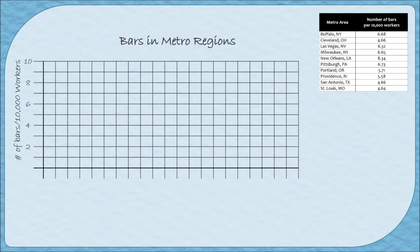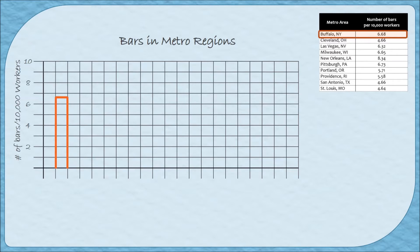Now comes the fun part — we get to make the bars. The first city in our table is Buffalo, New York, which has 6.68 bars per 10,000 workers. Because it's a decimal I'm going to have to approximate the height of the bar. To create the bar for Buffalo, New York, I go a little bit higher than halfway between the six and seven lines. Since 0.68 is more than 0.5, this line should go a little bit higher than halfway. Then I draw the left and right sides of the bar connecting down to the horizontal axis, and label it 'Buffalo, New York.'